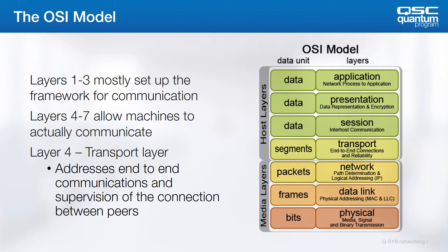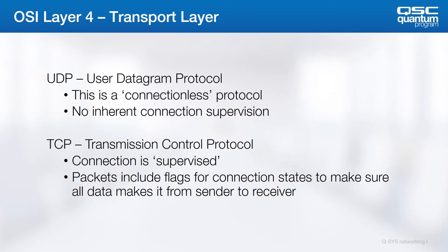We've now covered the pertinent features of the media layers of the OSI model. You can see that this is the real workhorse of the Ethernet model. While the media layers determine how data gets there, Layers 4 through 7 determine how devices communicate on a higher level. Layer 4, the transport layer, determines if and how connections between devices are supervised and how a device handles multiple services at once. There are two major categories of traffic in the transport layer: the User Datagram Protocol, or UDP, and the Transmission Control Protocol, or TCP.